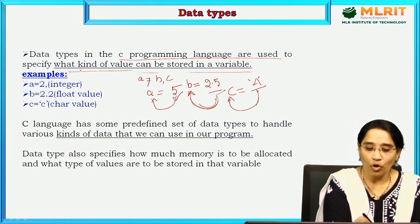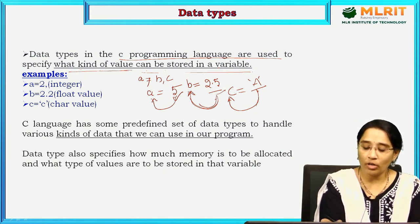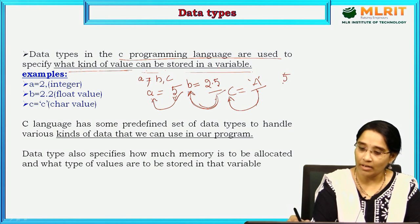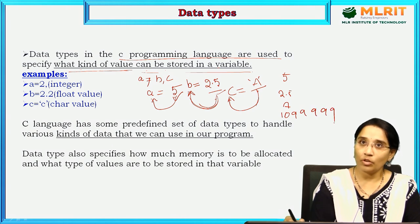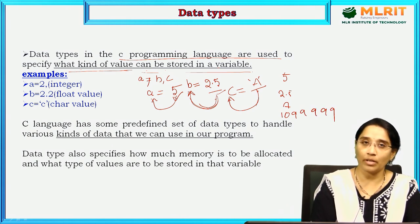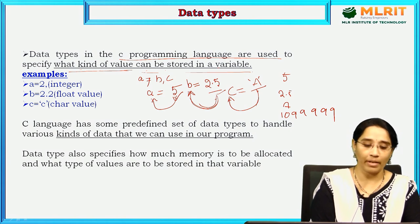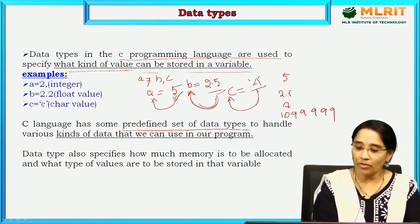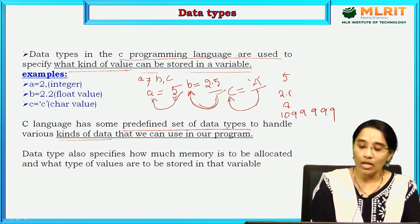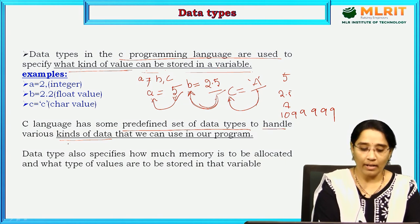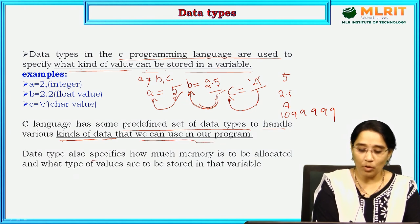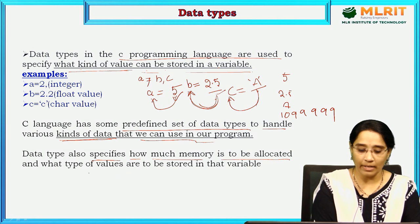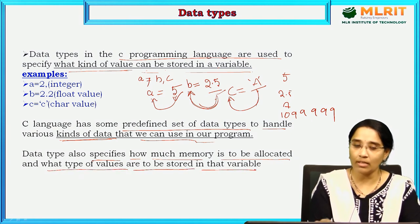In the first line, what kind of value can be stored to a variable — whether it is an integer, float, a character, or a bigger number like this. C language has some predefined set of data types to handle various kinds of data. Data type also specifies how much memory is to be allocated and what type of values are to be stored in that variable.